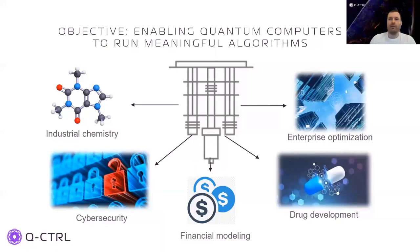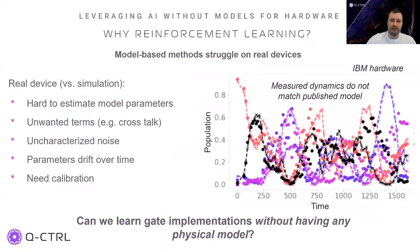When we think about the future of quantum computation, a clear end goal is to be able to run algorithms that solve meaningful problems. To achieve that, we must be able to execute high quality gates, which require a high level of control and optimization. The widely used model-based methods struggle on real devices. Unlike in simulations where model-based methods are successful, on real hardware it's much harder to accurately estimate model parameters. There are unwanted effects like crosstalk, noise sources that are often uncharacterized, and parameters that tend to drift over time.